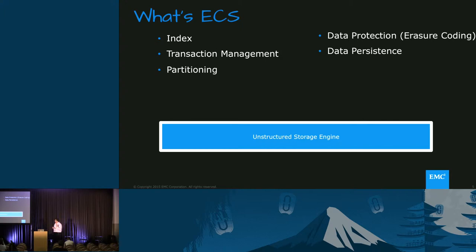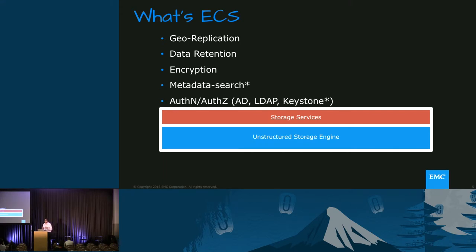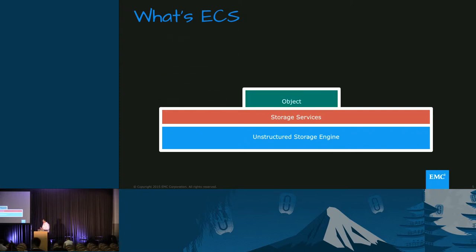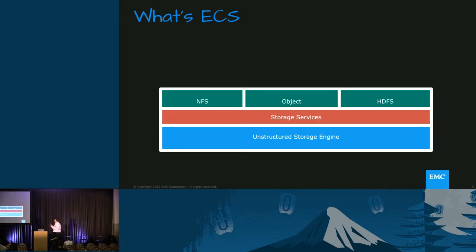What's unique about it is that it is uniform across all of the access methods. On top of the storage engine, we've added storage services. These storage services provide geo-replication, data retention, encryption, and we've also added metadata search inside those storage services. We believe this is a key capability of ECS — it allows you to search user-level metadata and system metadata. We then provide authentication services on top, and ECS runs all of that with object storage, so you can access data via S3 or Swift, HDFS, and NFS.